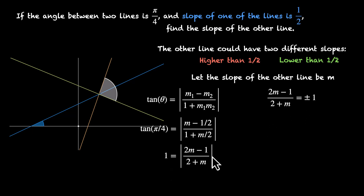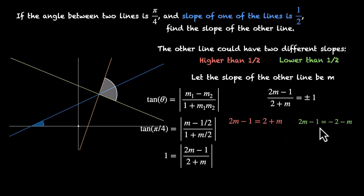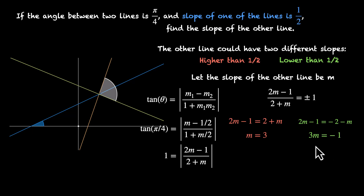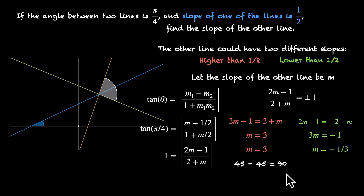Breaking down the mod: either (2m minus 1) divided by (2 plus m) equals 1, or equals minus 1. First equation: 2m minus 1 equals 2 plus m, so m cancels and m equals 3. Second equation: 2m minus 1 equals minus(2 plus m), giving minus 2 minus m, so 3m equals minus 1, which means m equals minus 1 by 3. So m equals 3 or m equals minus 1 by 3. The first line has slope 3 and the green line has slope minus 1 by 3. Multiplying these two slopes gives minus 1, confirming that these lines are perpendicular to each other.